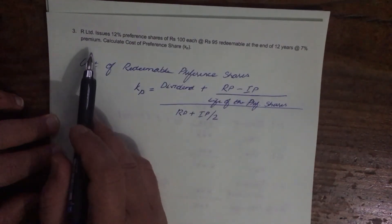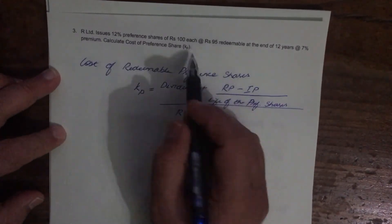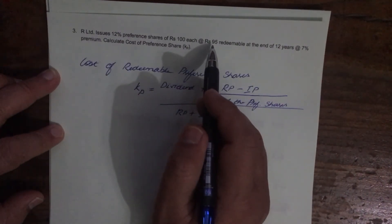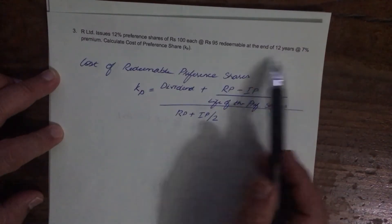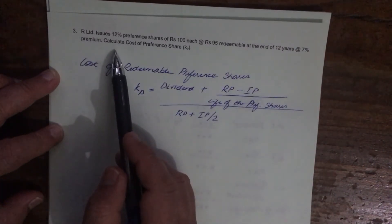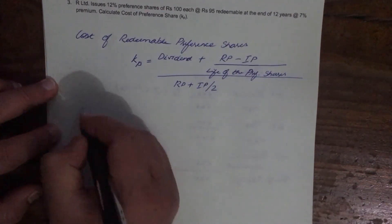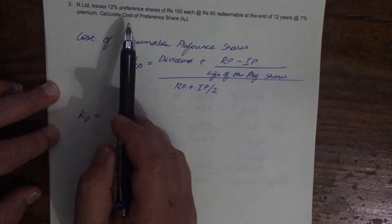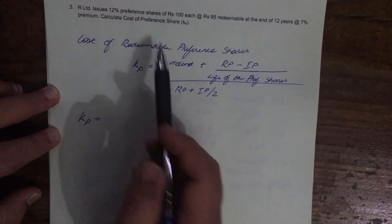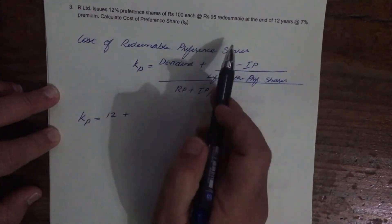Our Limited issues 12% preference shares of rupees 100 each at 95 rupees, redeemable at the end of 12 years at 7% premium. Calculate cost of preference shares. KP equals dividend — 12% on face value, so 12% on 100 is 12 rupees.